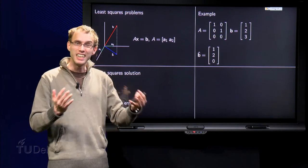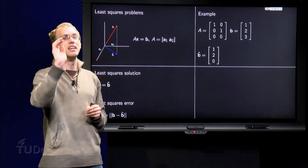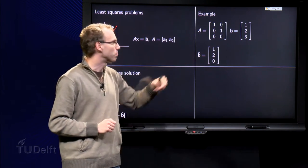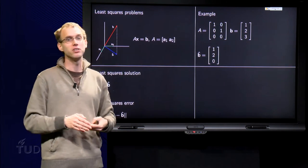Because we have such an easy A, we can immediately compute b̂. b̂ is the projection of b on the XY plane, so that is just [1, 2, 0]. So now we have a new system.